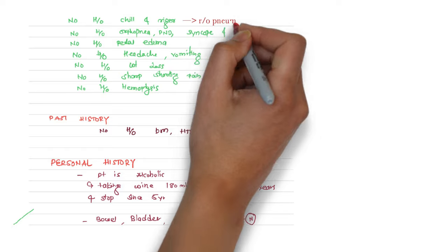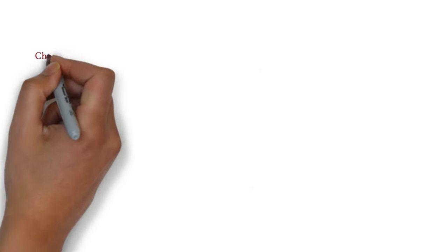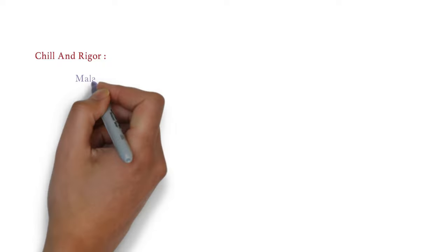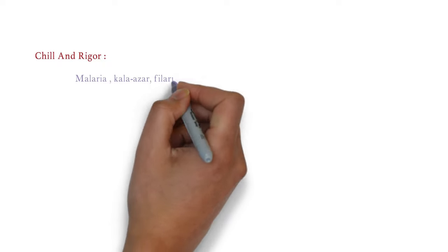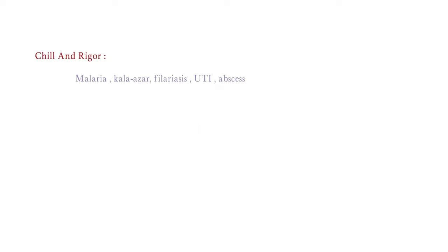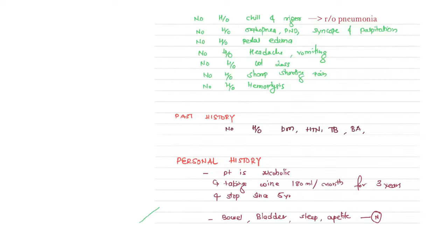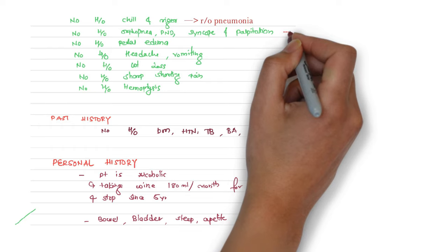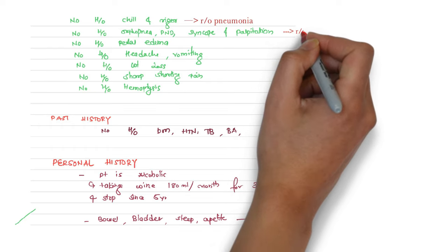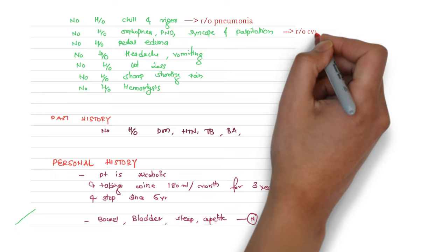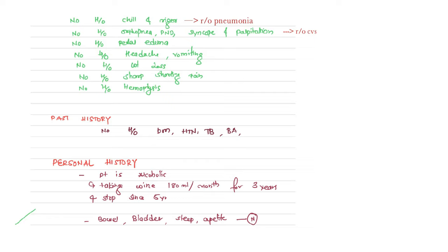Negative history: no history of chills and rigors — this is to rule out pneumonia. Chills and rigors can be found in malaria, filariasis, urinary tract infection, abscess, and pneumonia. No history of orthopnea, PND, syncope, and palpitation — to rule out cardiovascular system. No history of pedal edema, headache, vomiting, weight loss, sharp shooting pain, or hemoptysis.